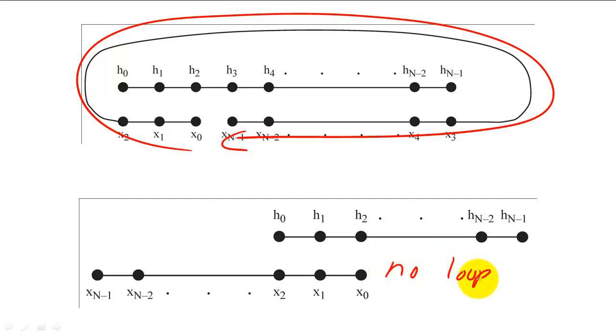By inspection, we can see that the easiest way to implement linear convolution through cyclic convolution is to zero-pad the length of the input and the filter.